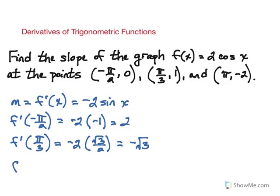Now let's see what happens at π. We have -2 times the sine of π, which is 0. So that's coming out 0. Think about what that tells us. That tells us there's going to be a horizontal tangent there.